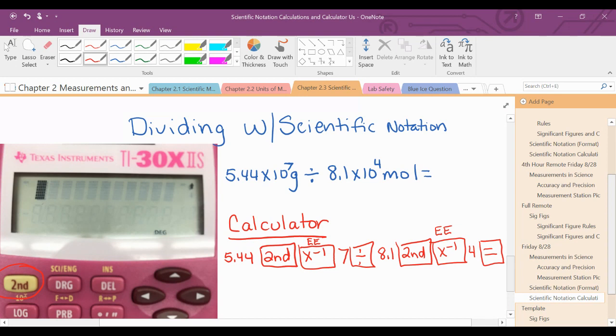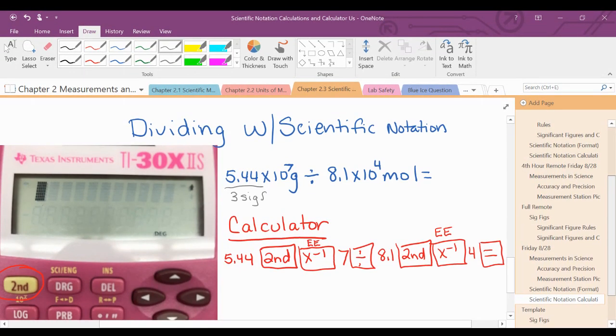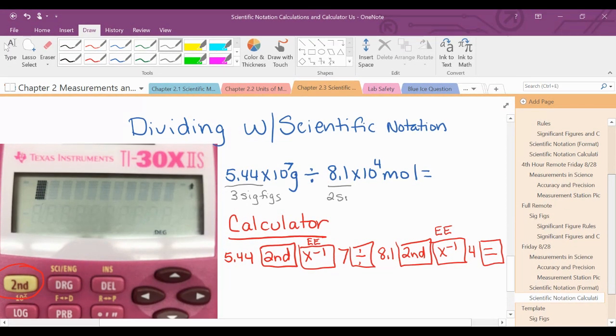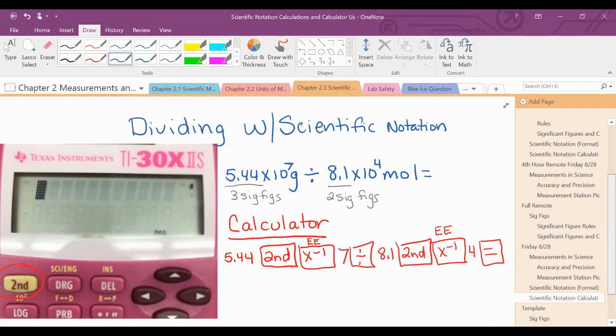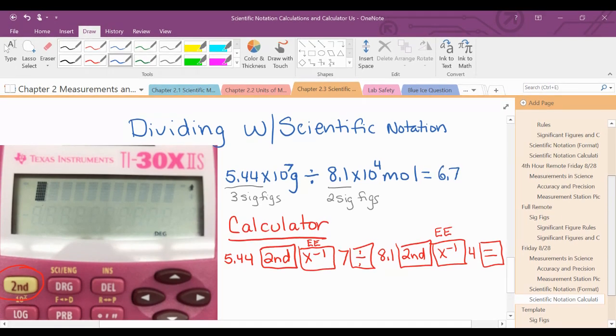You do need to remember sig figs. Your calculator does not remember sig figs. You do. And so when I take this problem, this number here has 3 sig figs. This has 2 sig figs, so my answer should have 2 sig figs, and so you should get 6.7 times 10 to the 2nd grams per mole.